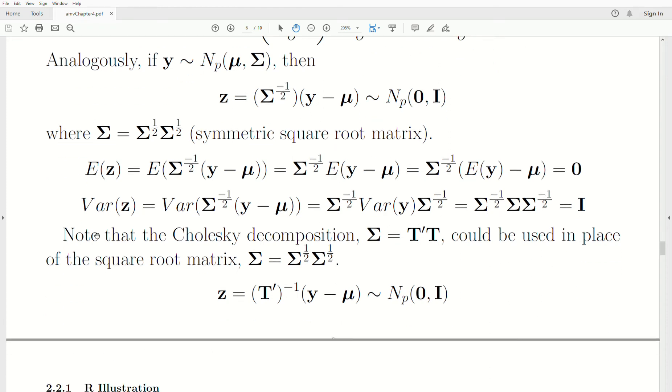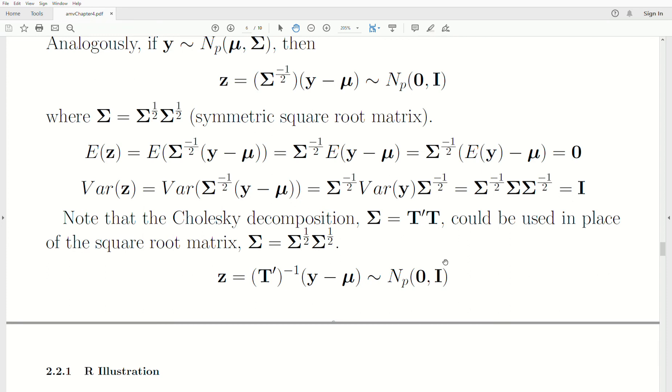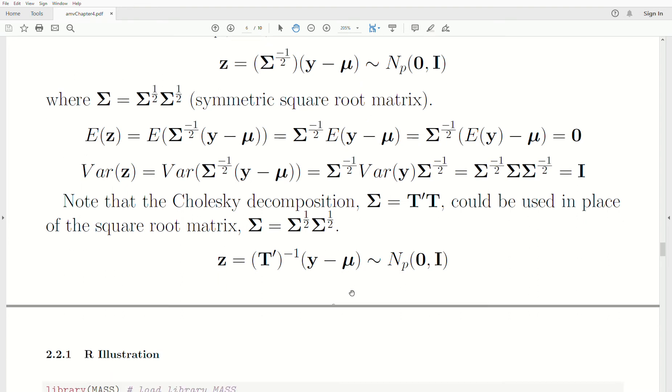Now a note that we could use, there's so many different transformations that you could use to standardize a multivariate normal, and another one is Cholesky's decomposition. So sigma can be thought of as T transpose T, and that could be replaced by the square root matrix. So you take this transformation, T transpose inverse Y minus mu. That's also a standard normal.